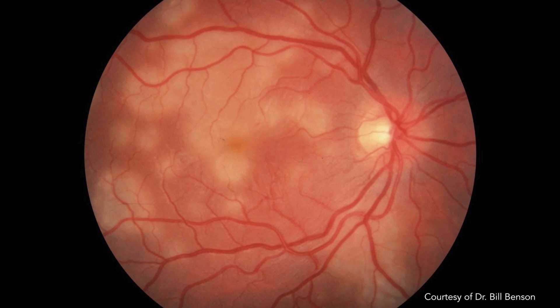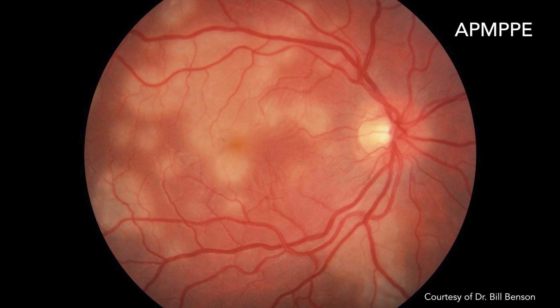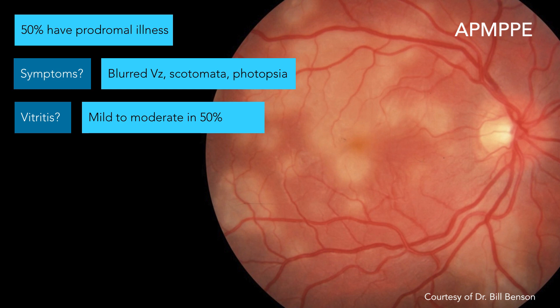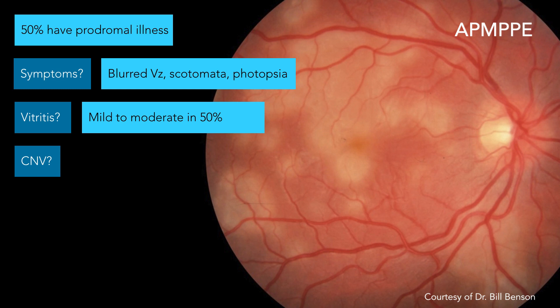Now we've got another white dot syndrome. Tamana, which white dot syndrome do you think this is? Go with your gut. Good. So 50% are going to have a prodromal illness. Symptoms are going to be blurred vision. They're going to get little blind spots. These guys can have photopsia, although I don't put them in the classic photopsia category. They do get vitritis, but they don't typically have a long disease course, so we don't worry about the big triad in these guys. These are bigger lesions, in the macula, kind of creamy yellow-white placoid — acute posterior multifocal placoid pigment epitheliopathy, AMPPE. Do they get CNV, Aaron? Rarely. Right — I put rare.